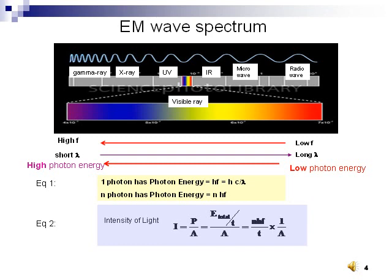Intensity equal to power divided by A, also equal to nhf divided by t divided by A. From this expression, we know in one second, more photons arriving to a given surface will have more intensity.